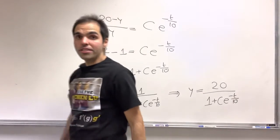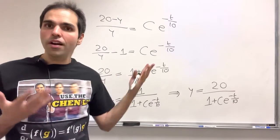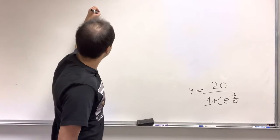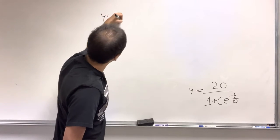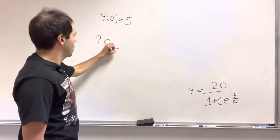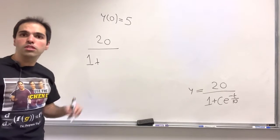And then, we're almost done, because the only thing left is to plug in the initial condition. Again, this is the formula for y. And I believe the initial condition was y of 0 equals 5. So 20 over 1 plus c e to the 0, that's just c, equals 5.